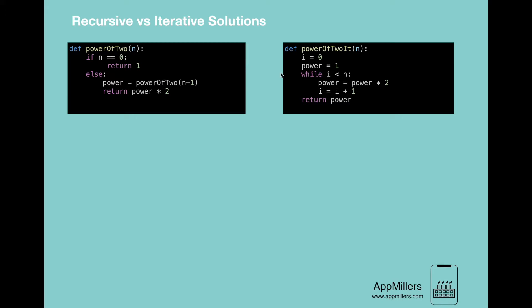In the recursive function, we have a base condition to stop infinite recursion, and if the condition is not satisfied the function calls itself recursively and returns power of 2. In the iterative solution, we start by creating two variables, i and power. While i is less than n, it multiplies power by 2, and in each iteration i is increased by one.